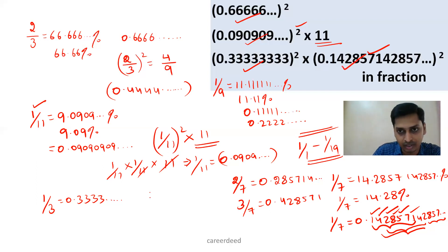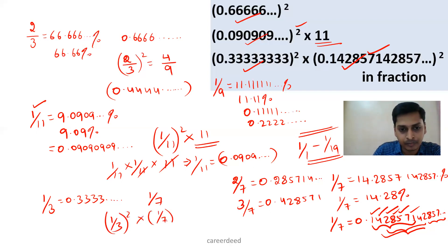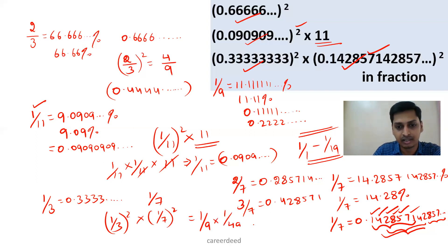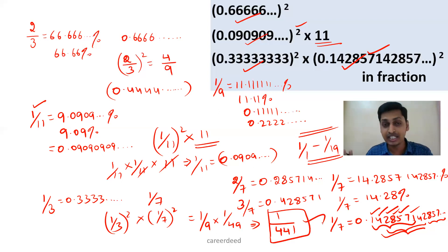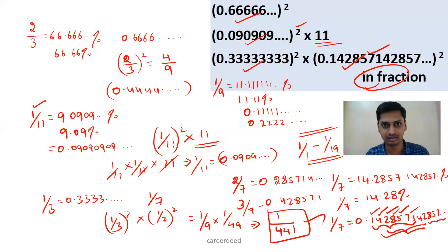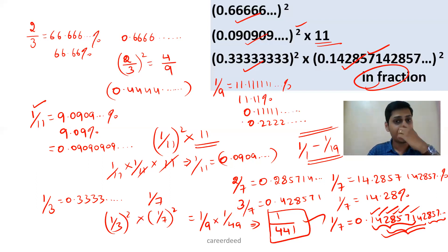For this question you write it as (1/3) whole squared × (1/7) whole squared. What is (1/3) squared? It is 1/9. What is (1/7) squared? It is 1/49. So it is 1/9 × 1/49 = 1/441. You don't need to find the decimal equivalent here because the question only asks for the fractional equivalent. So 1/441 is our answer.